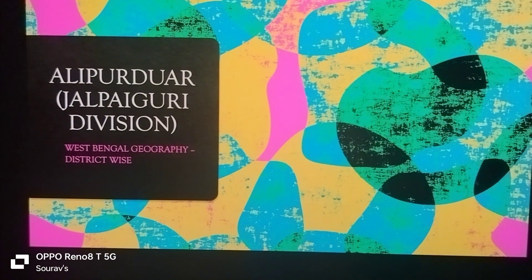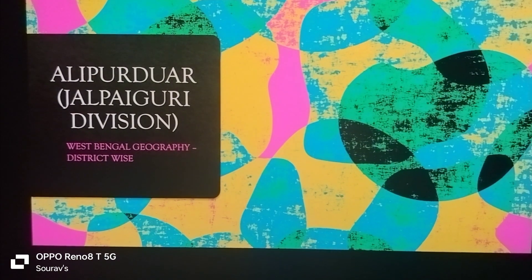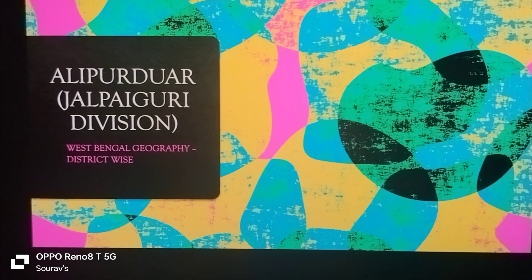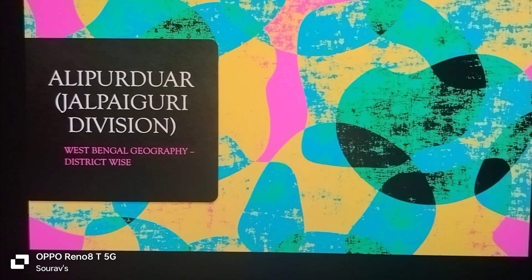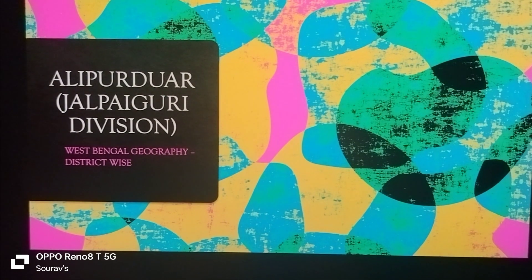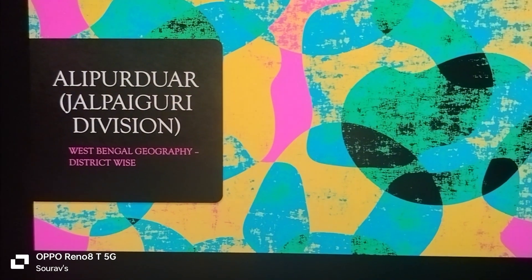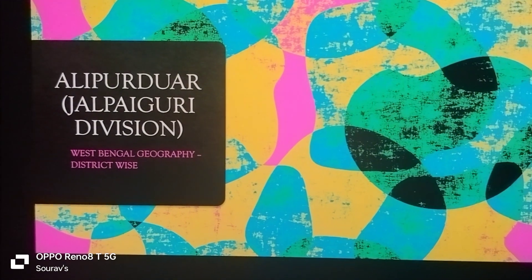What do I have to cover for WBCS? I have to do it district-wise and division-wise. We have to cover 15 divisions. So, 15 divisions are part of the WBCS syllabus, and we start the WBCS division coverage.